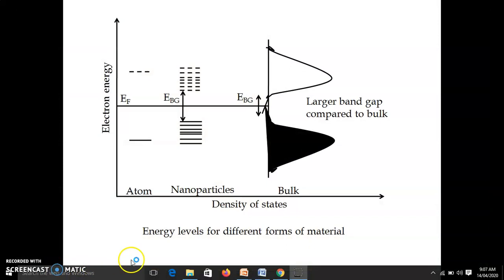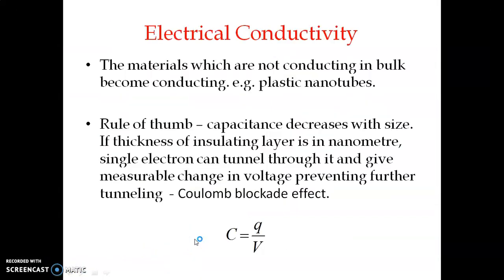Due to these three reasons — increase in surface to volume ratio, reduction in degree of freedom limiting electron motion, and increase in energy band gap — there is a drastic change in properties when we reduce the size of nanoparticles. Now we will discuss different properties one by one. First, electrical conductivity: there is a change in conductivity when a material becomes a nanoparticle — for example, plastic is insulating but plastic nanotubes are good conductors.